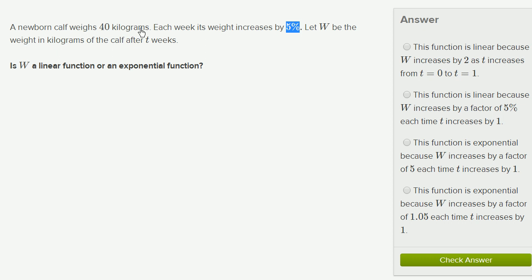So really, if we think about this function, it's going to be 40 kilograms times 1.05 to the t power. We're compounding by 5% every time. We're increasing by a factor of 1.05, or another way of thinking about it, by a factor of 105% every week.